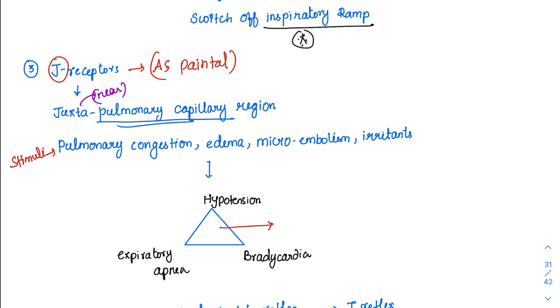it activates a specific reflex called pulmonary chemoreflex. We will study one more cardiac reflex also but this is pulmonary chemoreflex. What will happen to that person is the person will have hypotension, bradycardia, and expiratory apnea. He will have all these three triad of symptoms because of this activation of J-receptors.